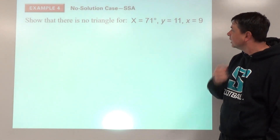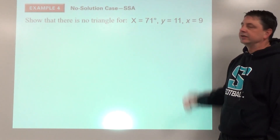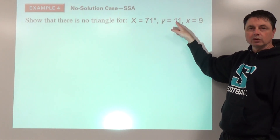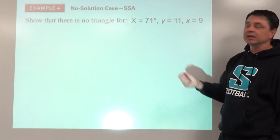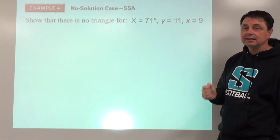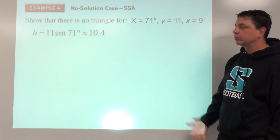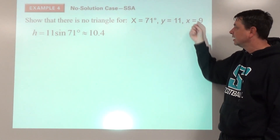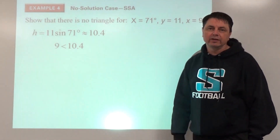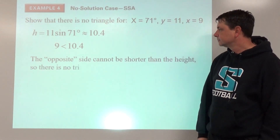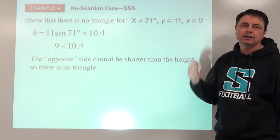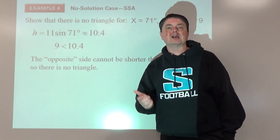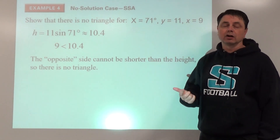Example number four — the no-solution case. Show that there is no triangle for this situation. First, look at matching letters: is the opposite side the same as or longer than the other to guarantee one triangle? No. So the height becomes relevant: height = other × sine of given angle = 10.4. The opposite (9) would have to be longer than or equal to 10.4 to create a triangle, but 9 is shorter than 10.4 — not long enough. Since it's shorter than the height, there's no triangle. If you set up Law of Sines anyway, you'll get an error in your calculations.